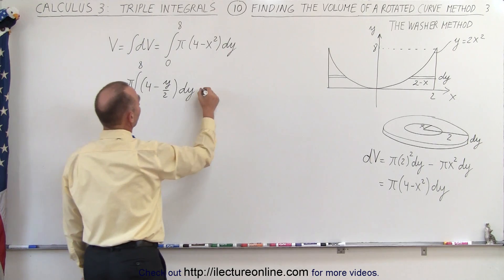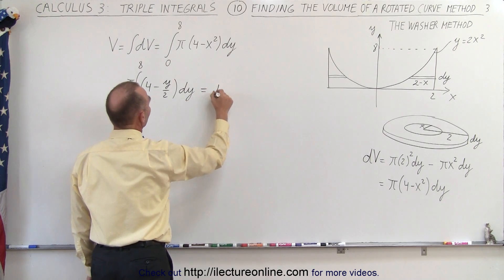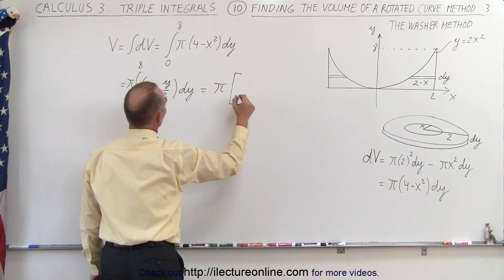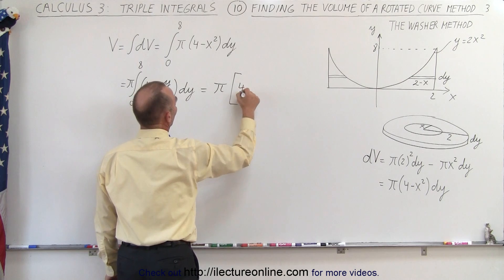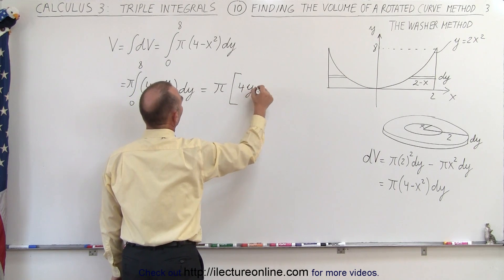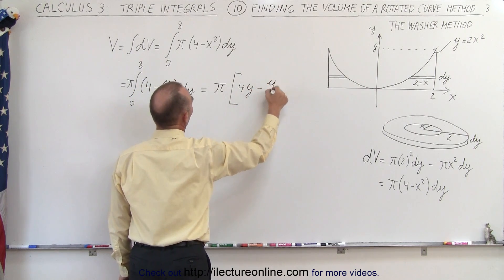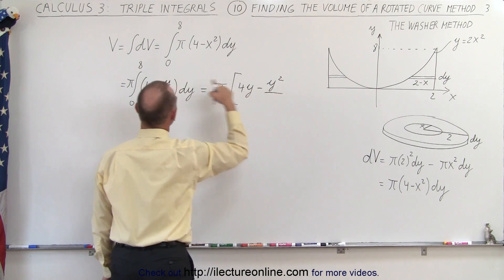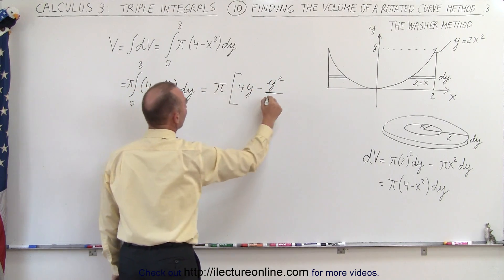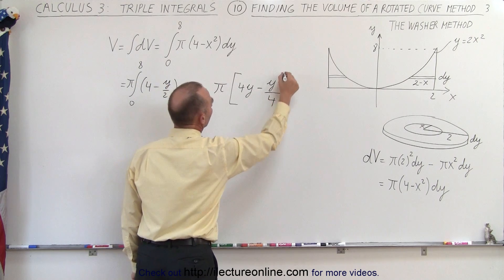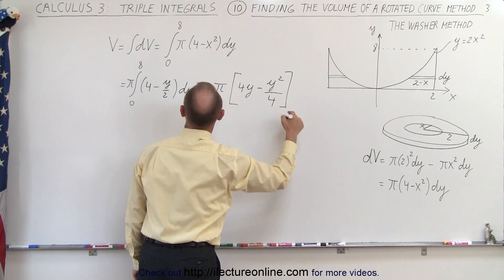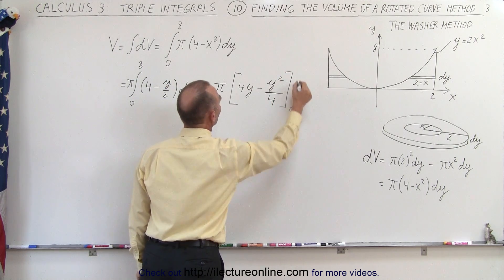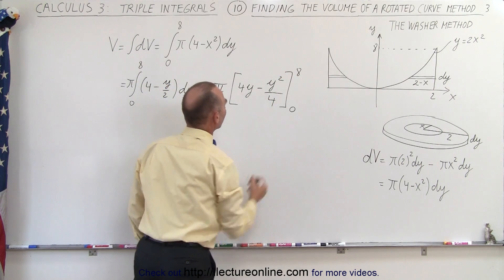When we integrate this, we get pi times (4y minus y squared over 4), and then we evaluate that from 0 to 8.